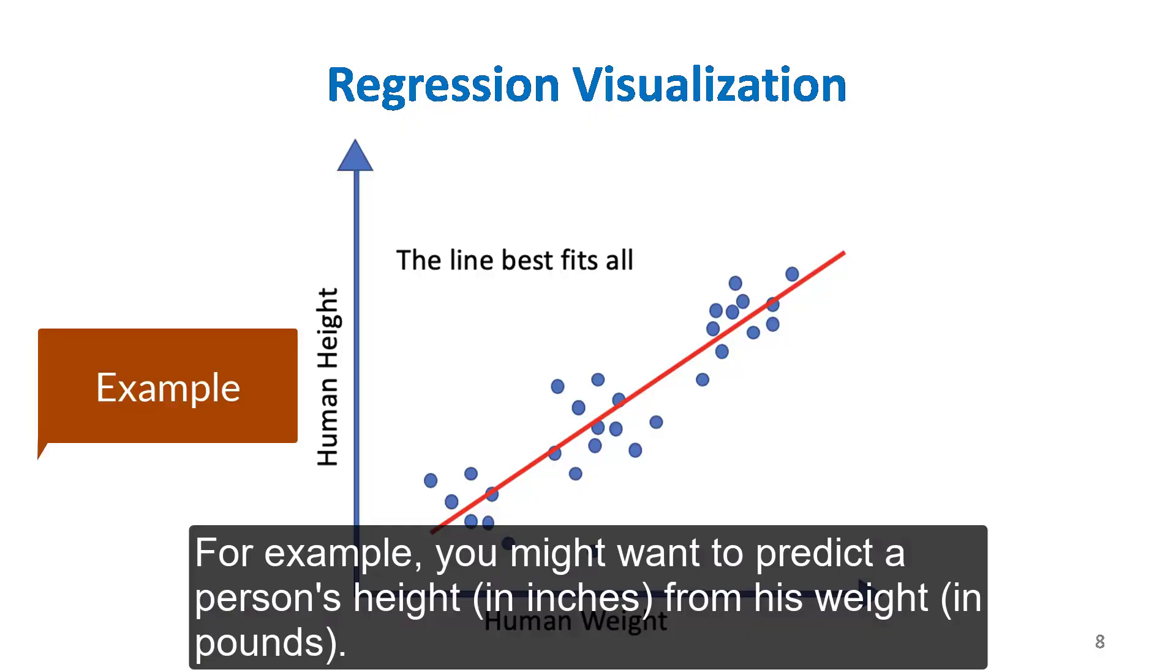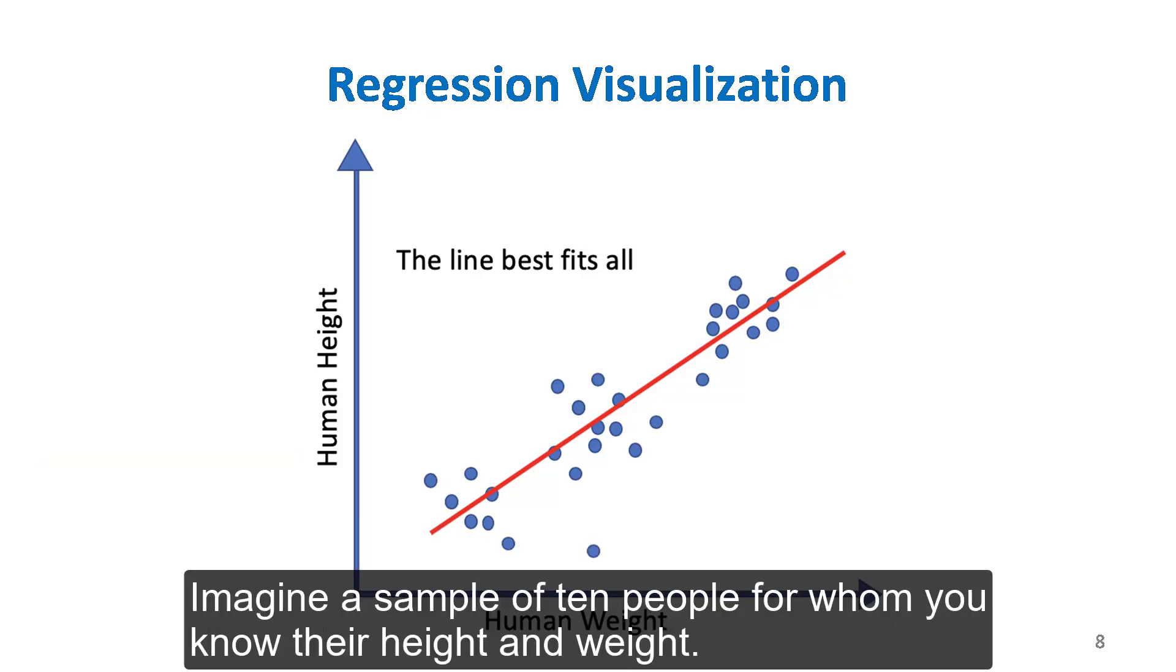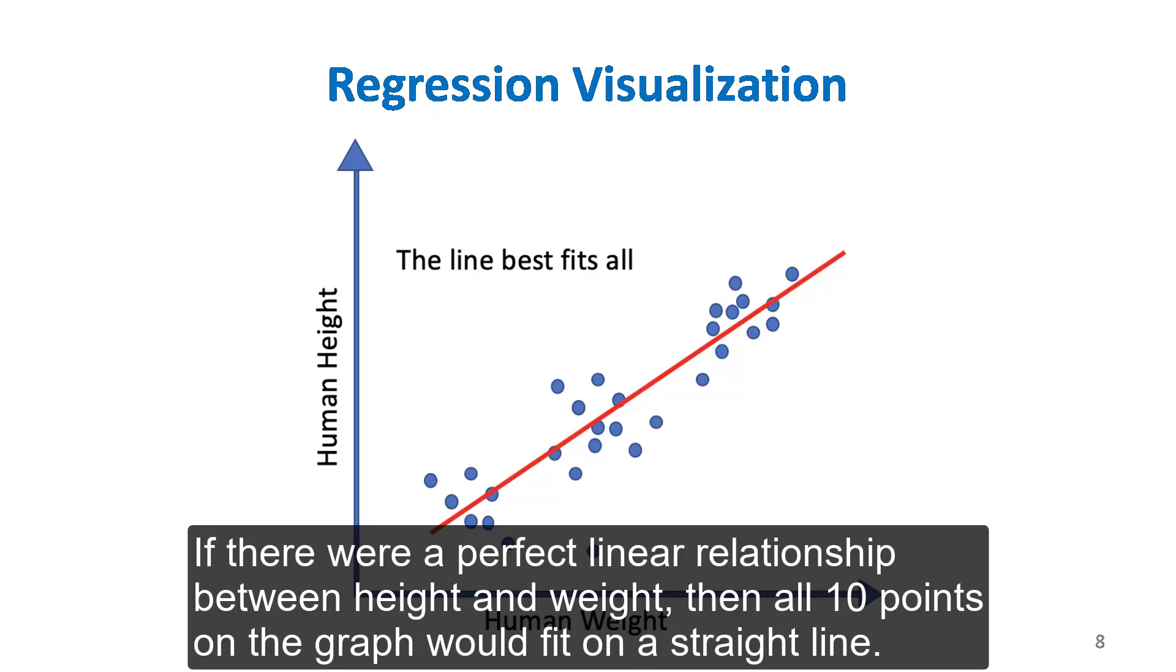For example, you might want to predict a person's height in inches from their weight in pounds. Imagine a sample of 10 people for whom you know their height and weight. If there were a perfect linear relationship between height and weight, all 10 points on the graph would fit on a straight line.